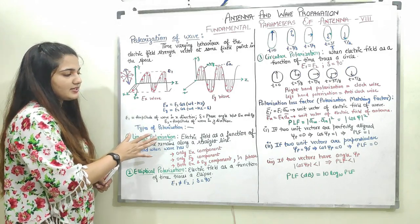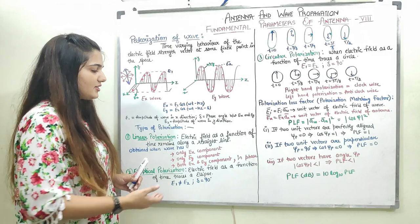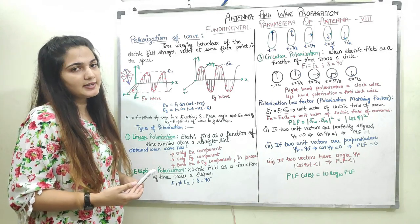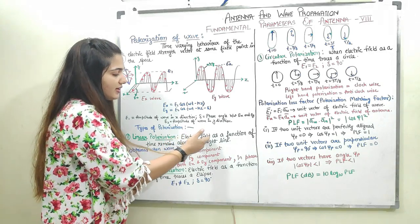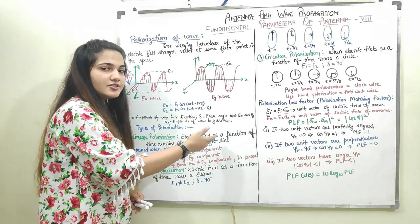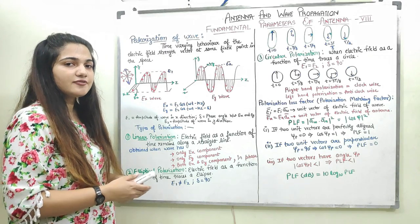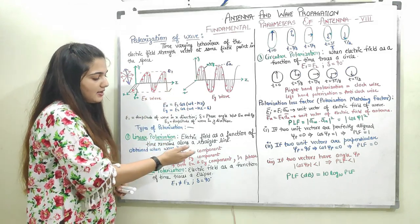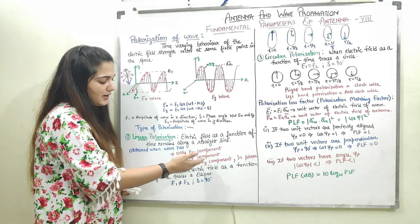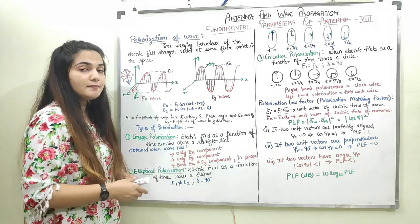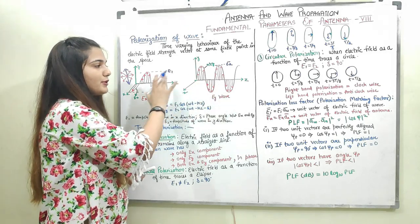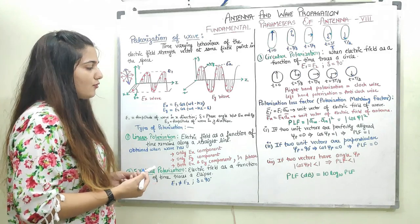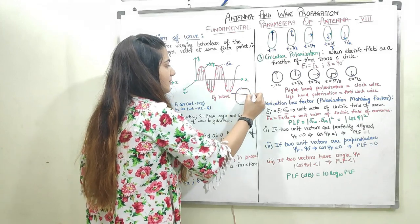First, let us come to linear polarization. In linear polarization, the electric field as a function of time remains along a straight line — it does not vary. It can have only an Ex component, or only an Ey component, or both Ex and Ey components, but they must be in phase.